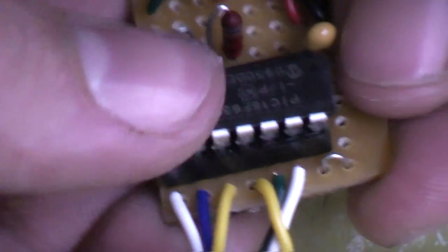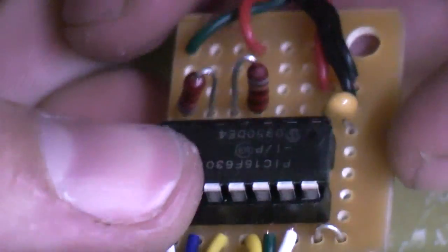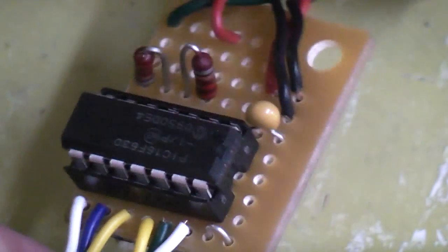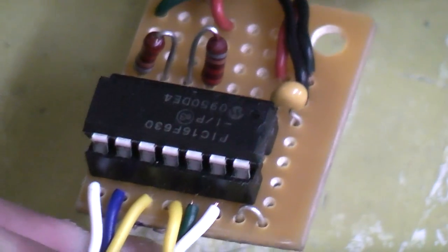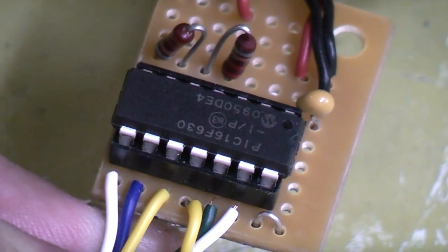So we're just going to push that down into our socket. And there we go, that is one switchless region chip ready to go. So next up, we're going to start fitting this into the console.